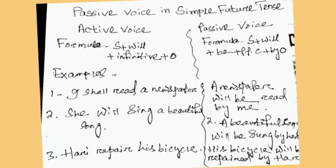Similarly, example three: 'Hari will repair his bicycle.' The passive will be: 'His bicycle will be repaired by Hari.' In this way, we can change from active to passive voice in case of simple future tense. We can easily remember all these.